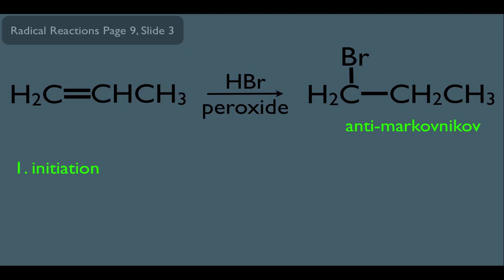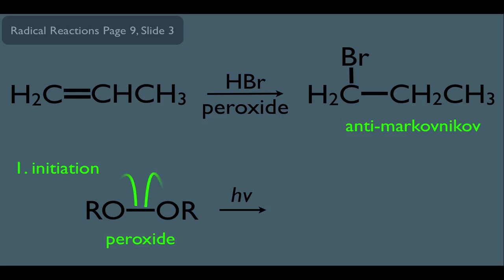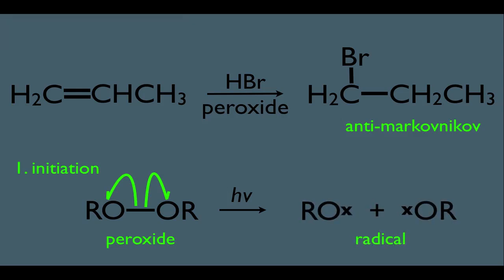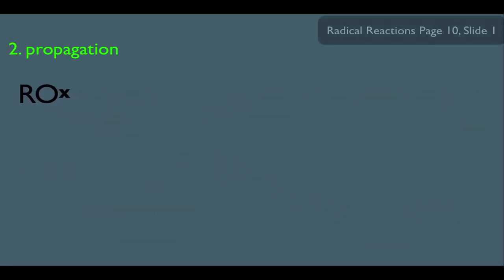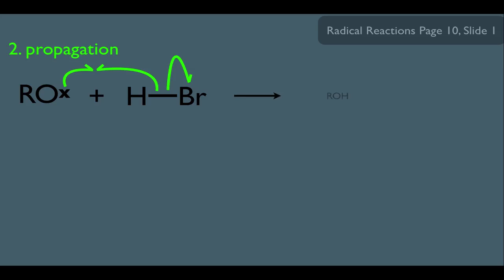It starts with initiation — the peroxide reacts with light. As we've seen before, the light splits the peroxide, creating two radicals. Once our radicals are created, we jump to the propagation steps. In the first propagation step, the radical reacts with the HBr that we're adding to the alkene. One electron meets up with the other, and the other electron in the HBr bond jumps up onto the Br, creating a connection between the RO and the H, and in the process, we're creating a Br radical.